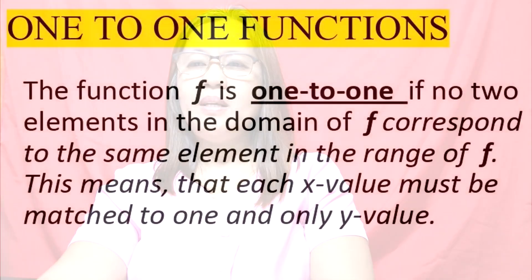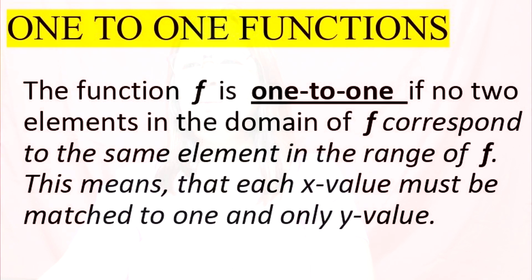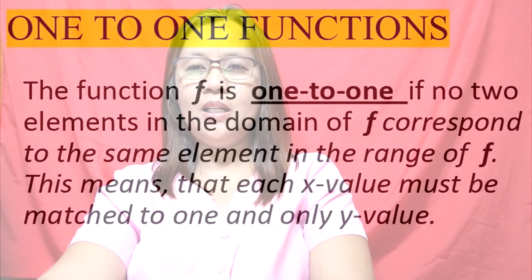What is a one-to-one function? The function f is one-to-one if no two elements in the domain of f correspond to the same element in the range of f. This means that each x value must be matched to one and only one y value.